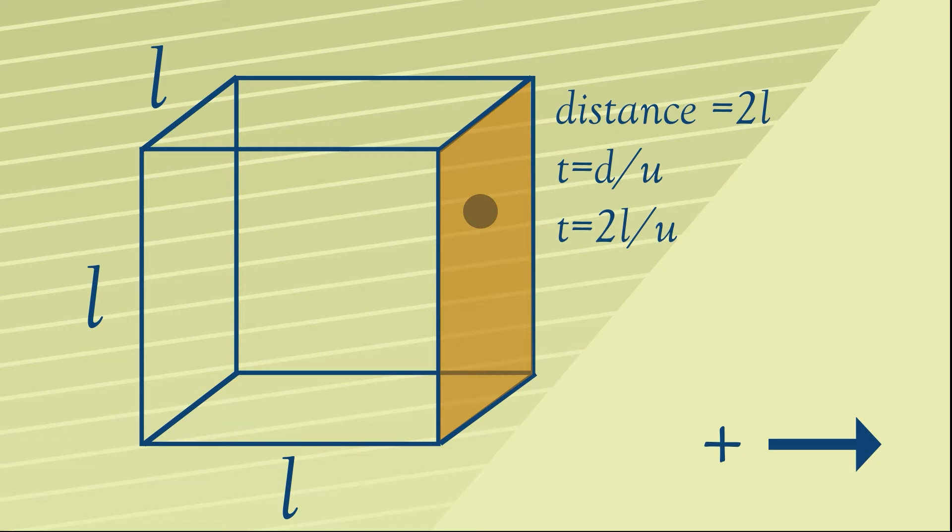Now we know that speed is distance over time, and rearranging that, we can say therefore that the time to cover that distance is going to be 2L over U.